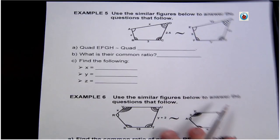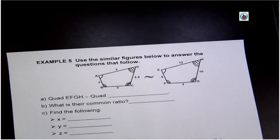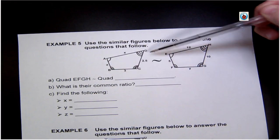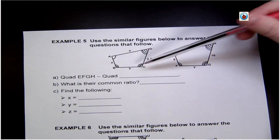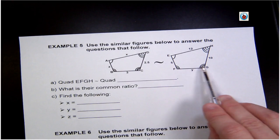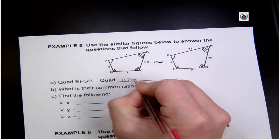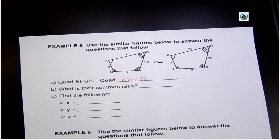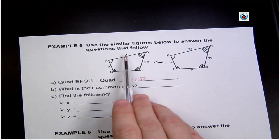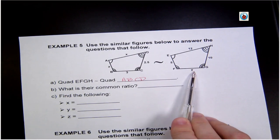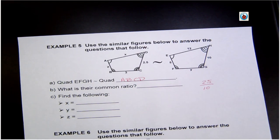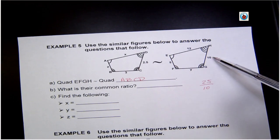Example 5: use the similar figures to answer the questions. ABCD is similar to EFGH, so the angles are the same and the sides are proportional. First, EFGH is similar to ABCD — be sure to go in the same order. For the common ratio, I choose a side where both lengths are known. That gives me a ratio of 2.5 to 10, going left to right.